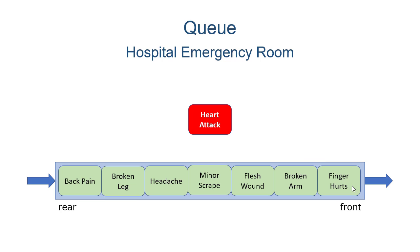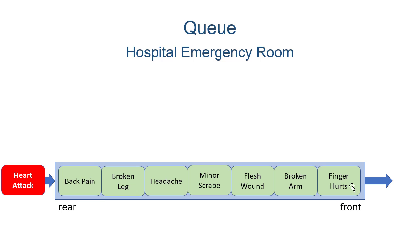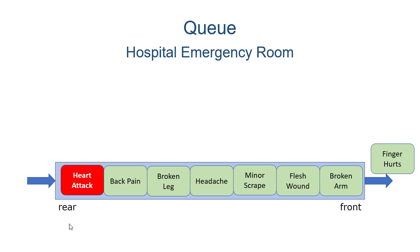So then suppose someone comes in who's having a heart attack. That person gets to go to the rear of the queue because that's how queues work. So then they'll help the person who has the finger that hurts, and once all of these other minor scrapes and headaches get handled, then they'll deal with the heart attack. Now you may say that doesn't seem like a good way to do that, and in fact, if you go to the emergency room, that isn't how it works.